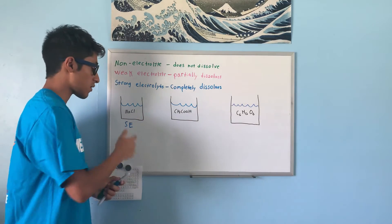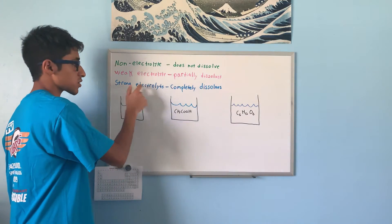In other words, all strongly ionic compounds are usually strong electrolytes.